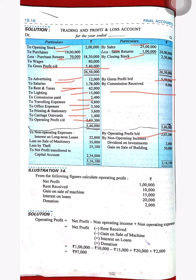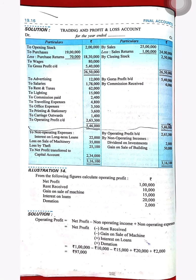Next, non-operating income such as dividend on investment and gain on sale of building is added on the credit side. Non-operating expenses like loss on sale of machine and loss by theft are debited. After accounting for these, our net profit comes to 2,34,000.